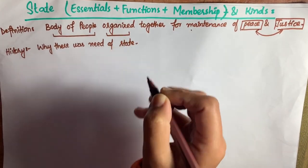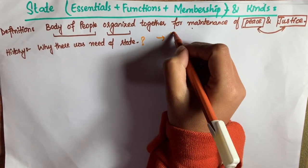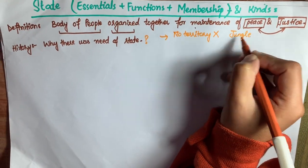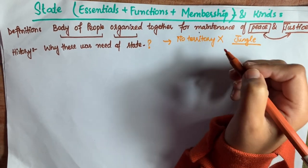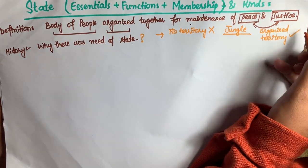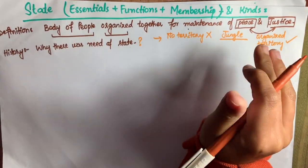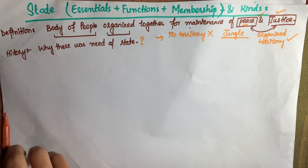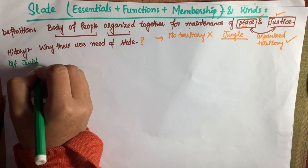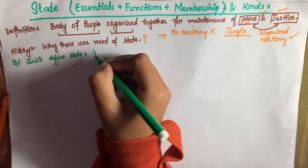Let's look at the history of state — why there was a need of state. Before state, there was no organized territory; people lived in an unorganized form, like a jungle. With the passage of time, people began thinking that there should be an organized territory, with proper peace, to end the rule of war and to live impartially.